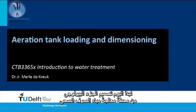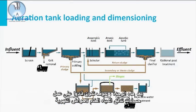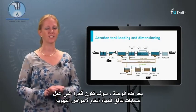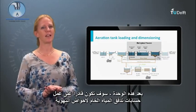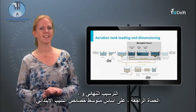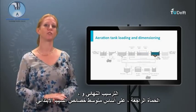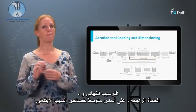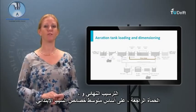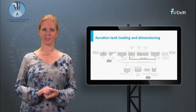Today we start with designing the biological part of a sewage treatment plant. After this module you will be able to make rough size and flow calculations of the aeration tanks, the final clarifier and the return sludge, based on average influent characteristics.